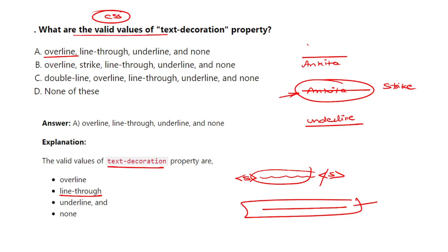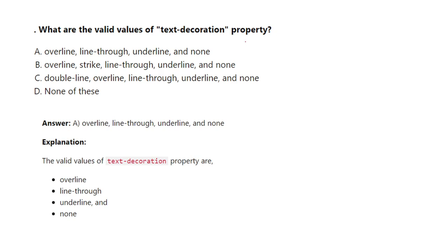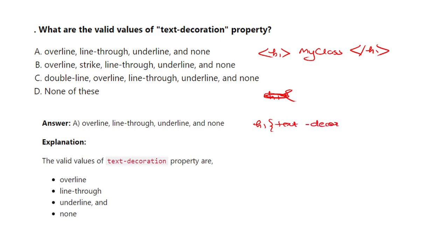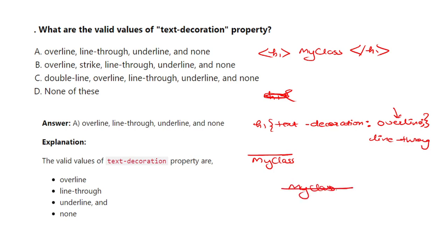Valid values are: overline, line-through, and underline. For example, for an h1 element: text-decoration: overline; — the output will be 'my class' with a line above it. If you change overline to line-through, the output will be 'my class' with a line going through it.